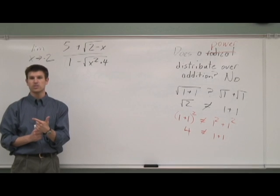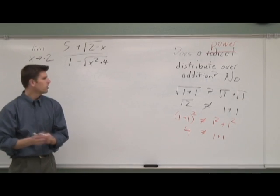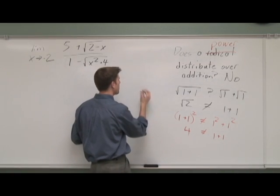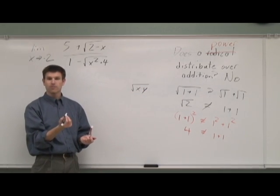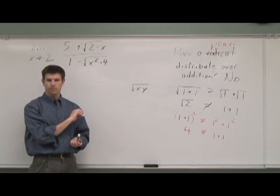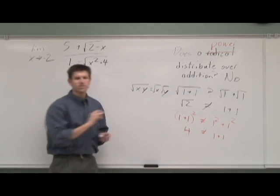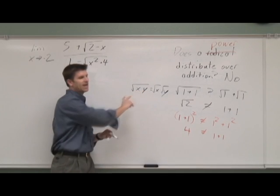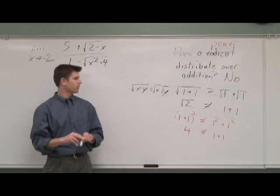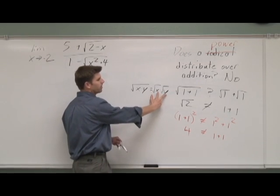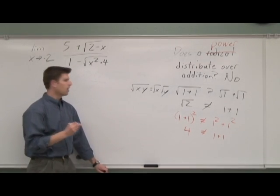The thing that confuses students is it does distribute across multiplication and division. So if you had x times y and you took the square root, it would be perfectly fair to say that is the square root of x times the square root of y, with one small caveat. What has to be true about the sign of these if you're going to do that? Nothing can be negative. Perfect. Because if they were both negative, you'd be going into a realm that your students probably wouldn't be familiar with. So that's how you simplify radicals.